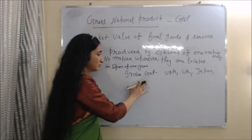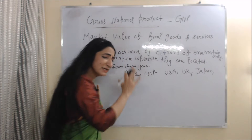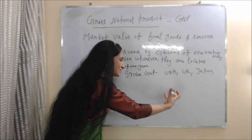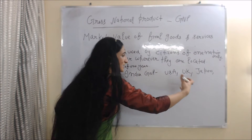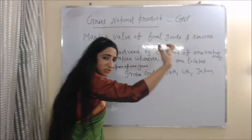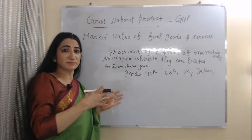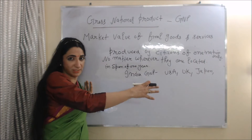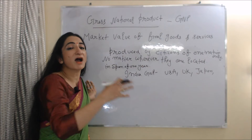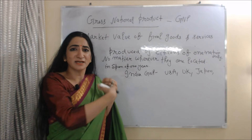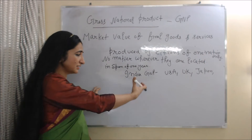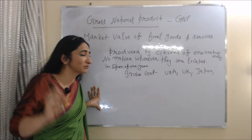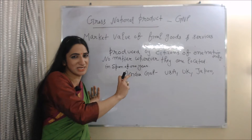For example, if we want to calculate GNP of India — some citizens of India are located in the USA, some are working in the UK, some are working in Japan. Whatever income they are generating, we will calculate it in India's GNP because they are citizens of India and their families are living in India. Ultimately, they will send their income to India, that's why it will be calculated in India's GNP.